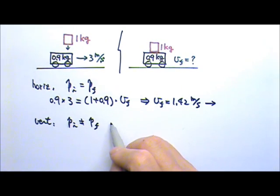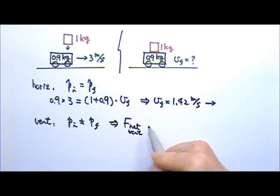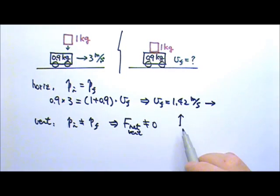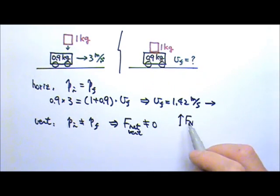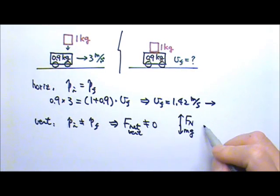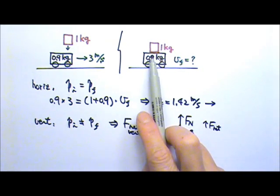And this is indeed the case. The moment the block lands on the cart, the normal force from the floor is more than the weight of the cart plus the block. This provides an upward net force to slow the block down to a stop in the vertical direction.